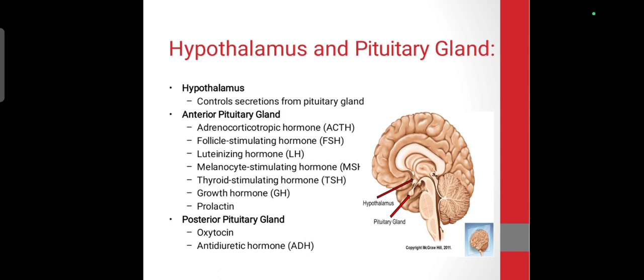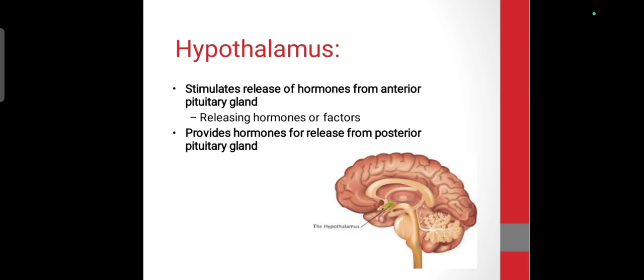The anterior pituitary releases the following hormones: ACTH (adrenocorticotropic hormone), FSH (follicle stimulating hormone), LH (luteinizing hormone), MSH (melanocyte stimulating hormone), thyroid stimulating hormone, growth hormone, and prolactin. The posterior pituitary releases oxytocin and antidiuretic hormone (ADH).